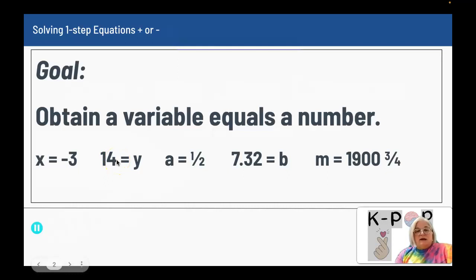This is just as correct, 14 equals Y, as X equals negative 3. The only problem is that sometimes when you're doing an assessment, they want a specific answer and they want you to put it like X equals and then the number.